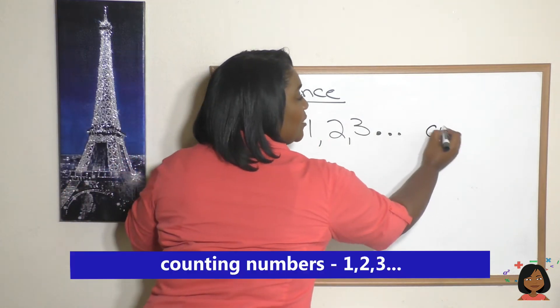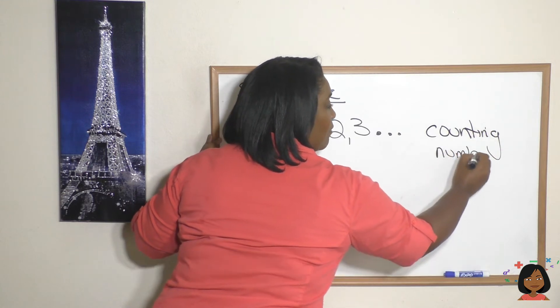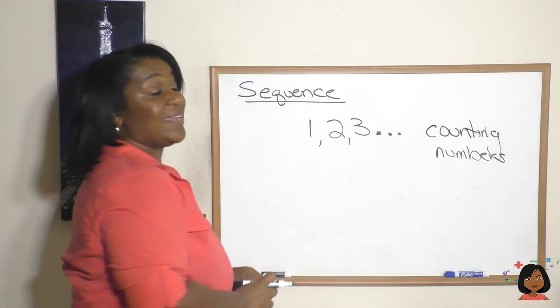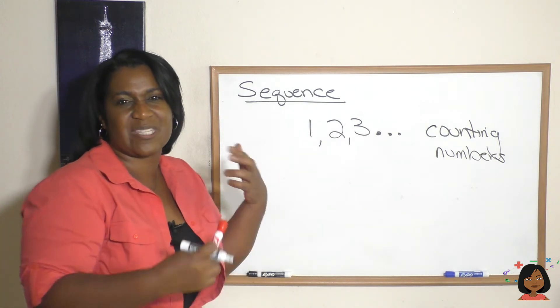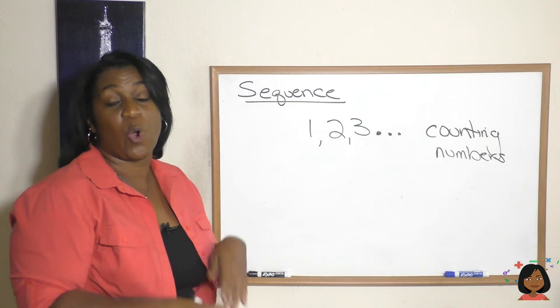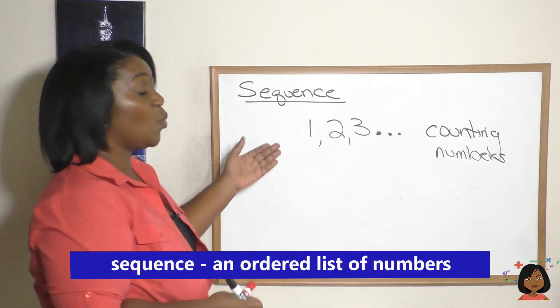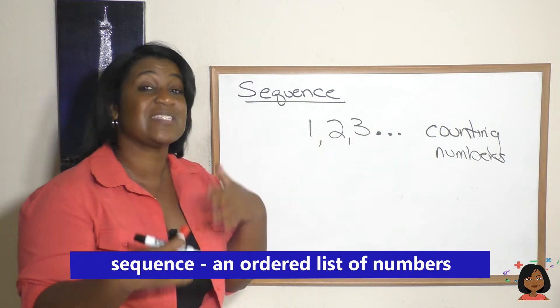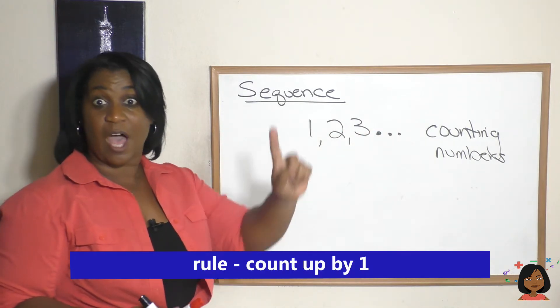That's pretty simple. Any kind of list of numbers that's in some kind of ordered sequence where there's a pattern to it or a rule to it, we call a sequence. So one, two, three, four, five, six is a sequence where the rule is that we count up by one.